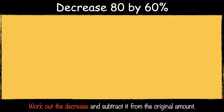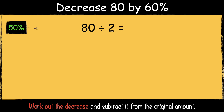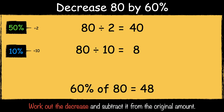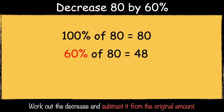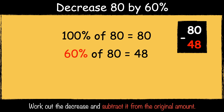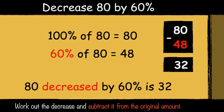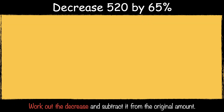Here's the next example: decrease 80 by 60%. First we can find 50% by dividing 80 by 2. 80 divided by 2 is 40. Then we can find 10% by dividing 80 by 10. 80 divided by 10 is 8. So 60% of 80 is 48. The next step is to subtract it from the original amount. 80 take away 48 is 32. So 80 decreased by 60% is 32.